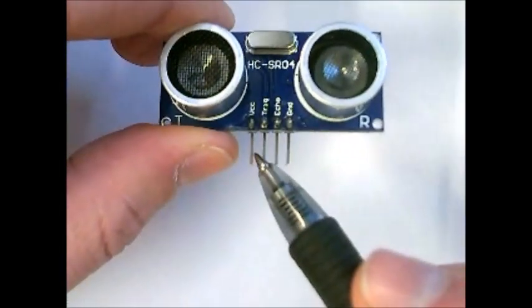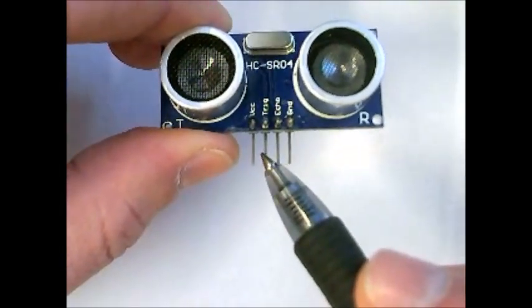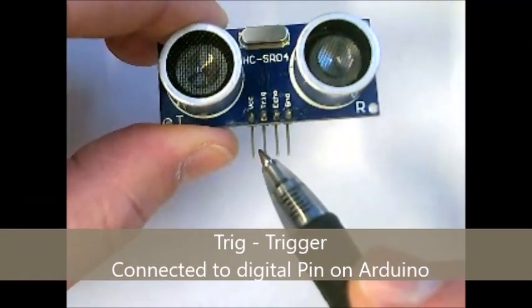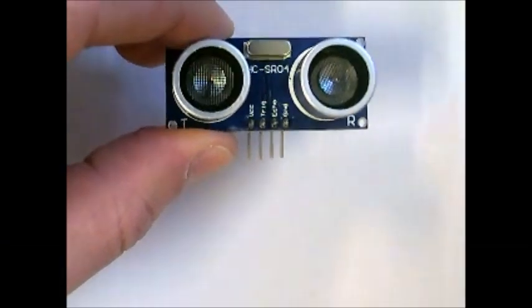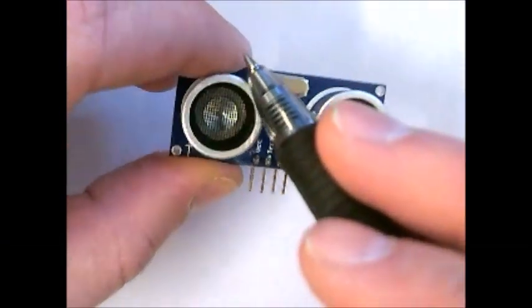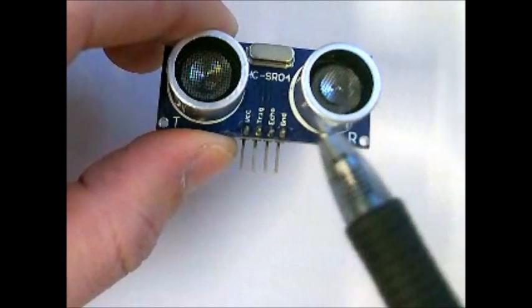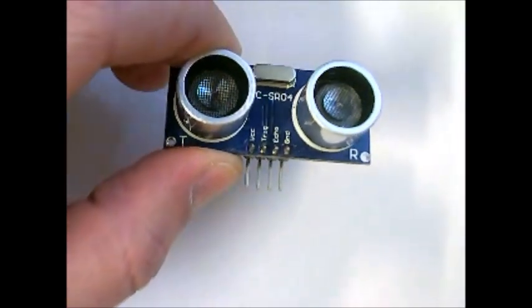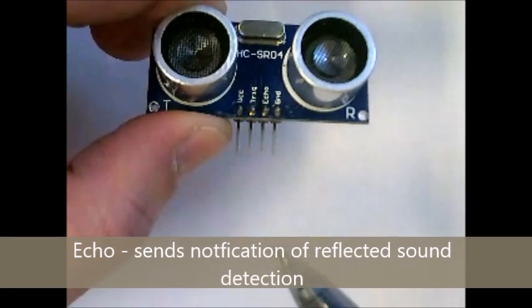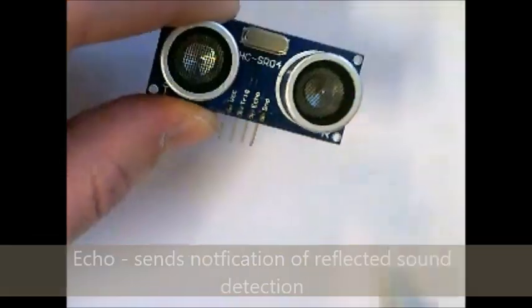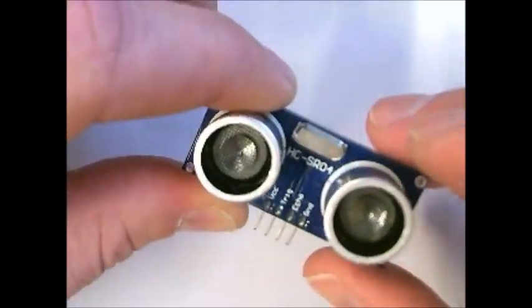And what the trigger is, the trigger pin, this is generally connected to a digital pin on the Arduino, which sends a signal, a digital signal that says, okay, send a pulse. The transmitter sends a pulse out, and then the receiver receives the pulse and sends that signal back to a digital pin on the Arduino again. And then you measure the time between those send and receive.